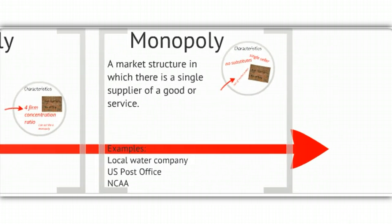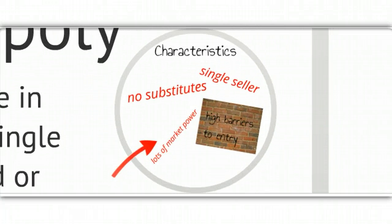A monopoly is a market structure in which there is a single supplier of a good or service. Mono means one, so monopoly has one seller. In addition, there are no close substitutes to the product. Otherwise, there would be some sort of competition. So this is a product in which there's no close substitute and only one entity sells it.